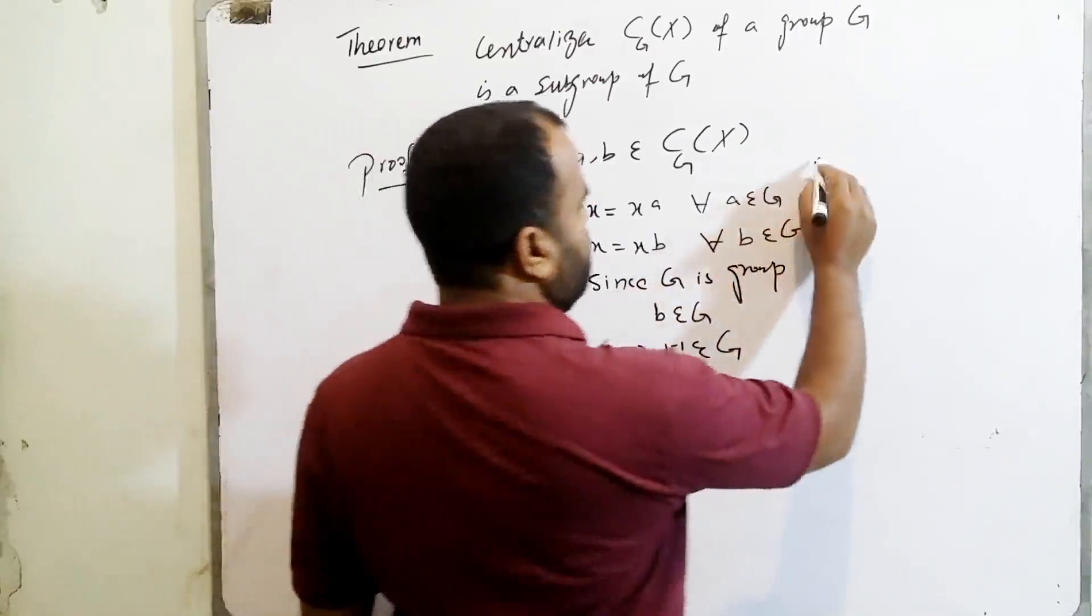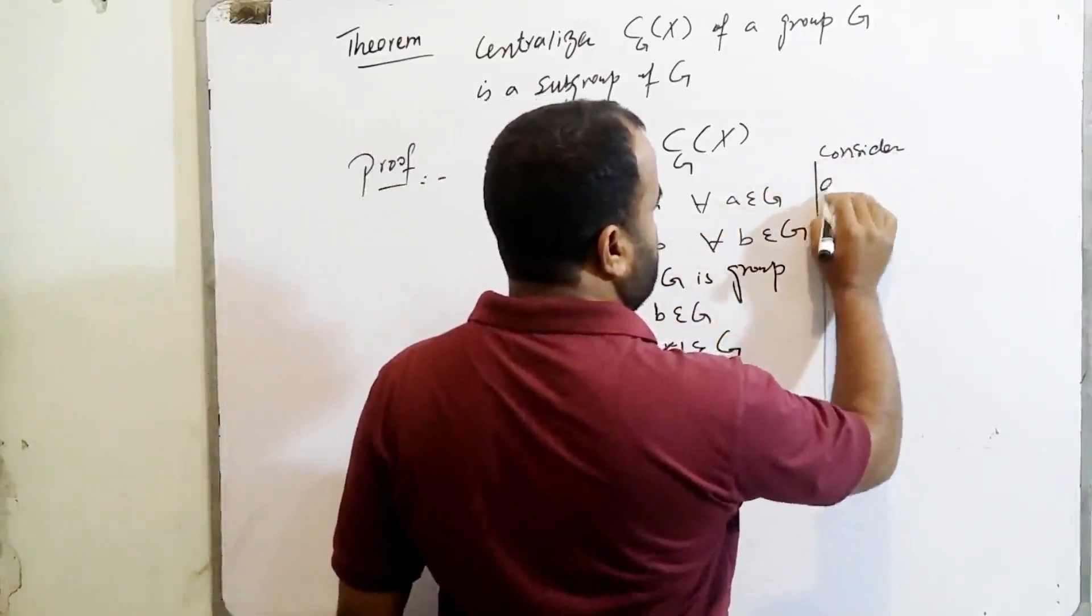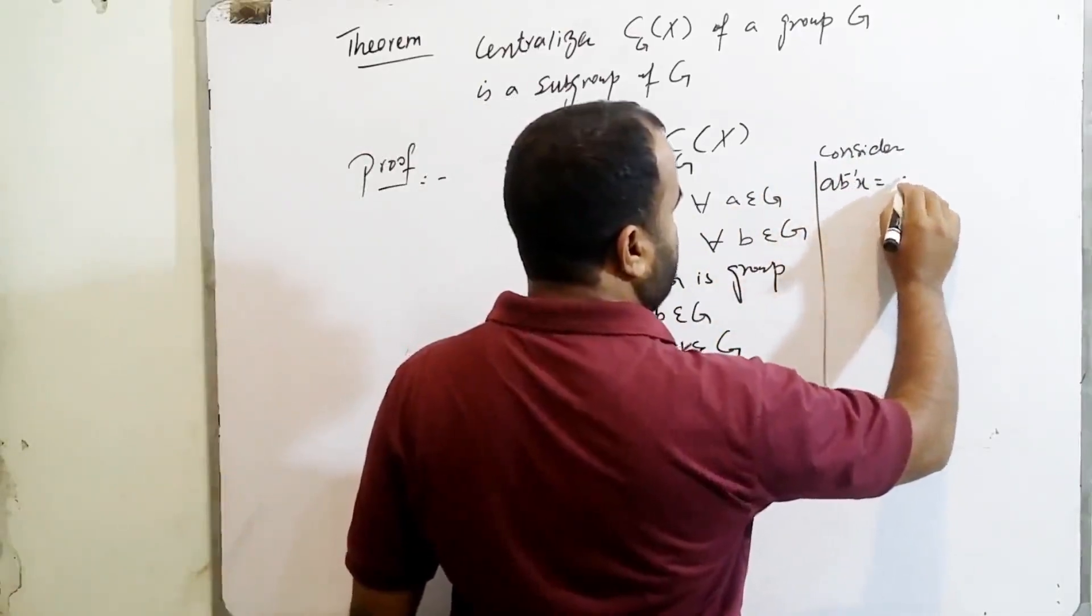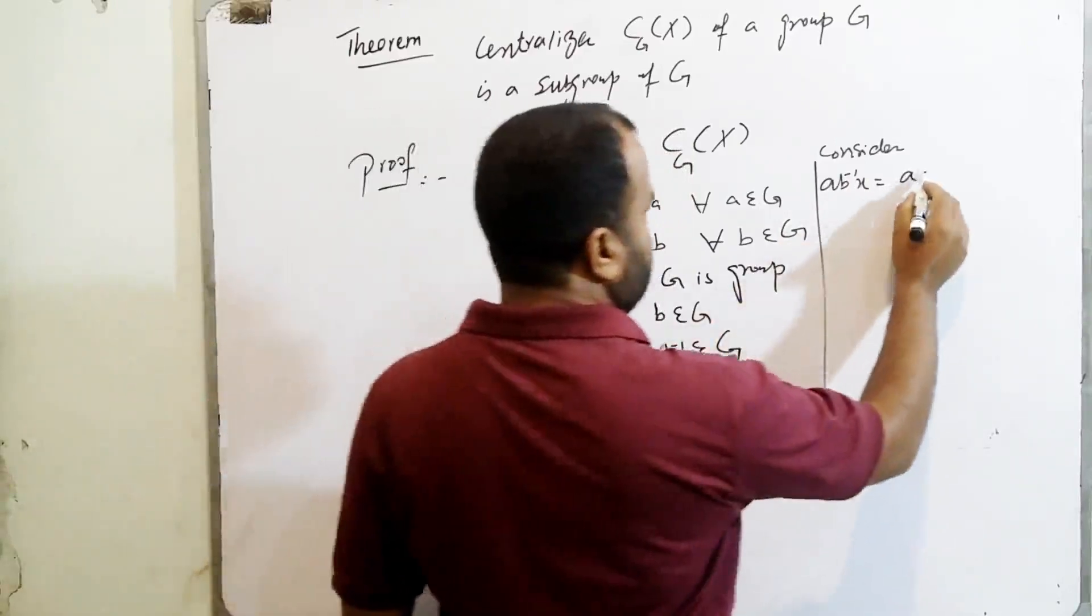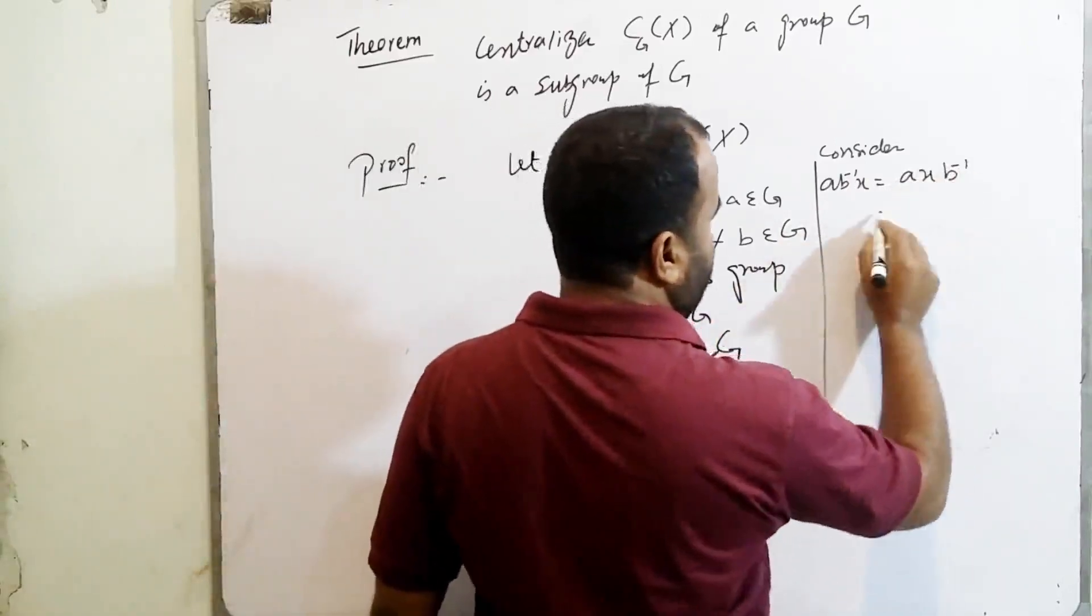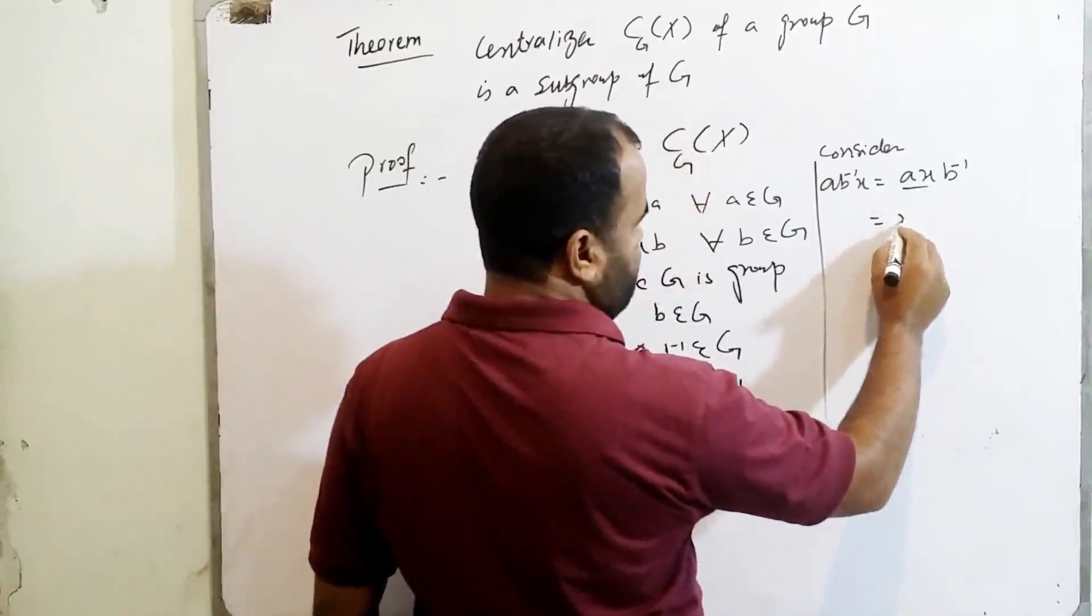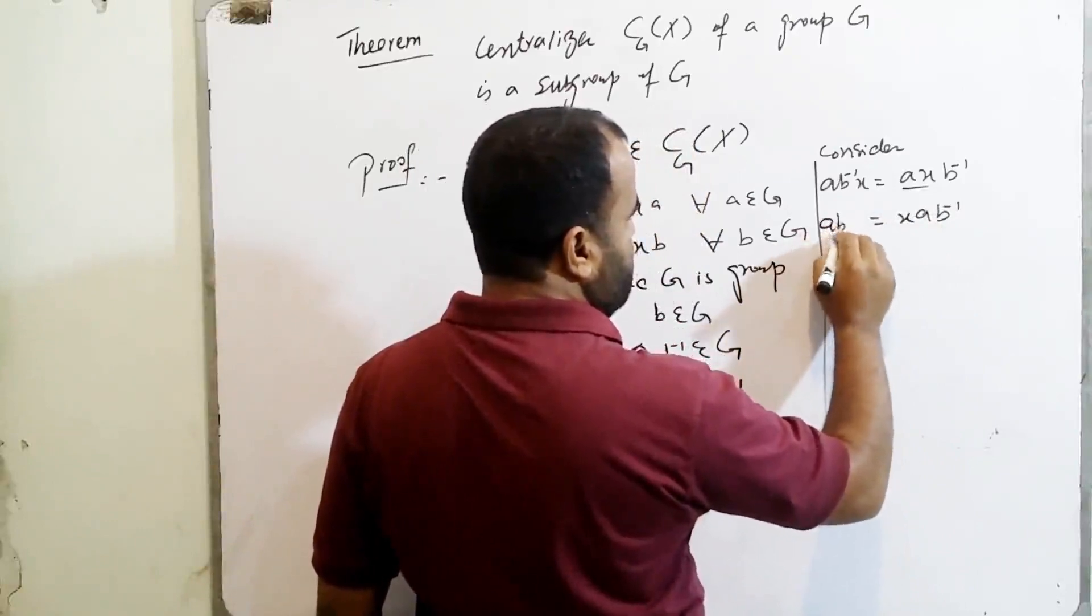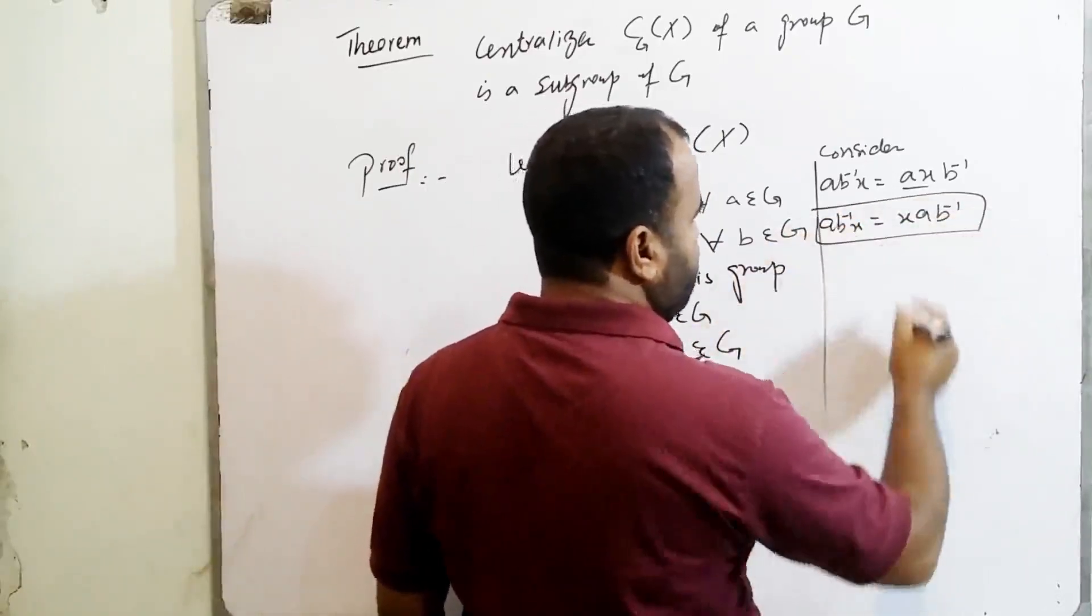Now consider AB inverse X. We know that AB inverse X is equal to XB inverse. And you know AX is equal to XA, so AB inverse X is equal to XAB inverse.